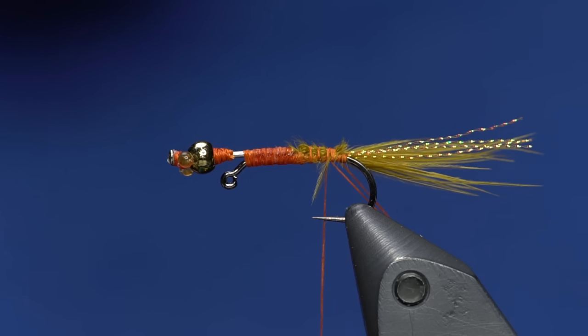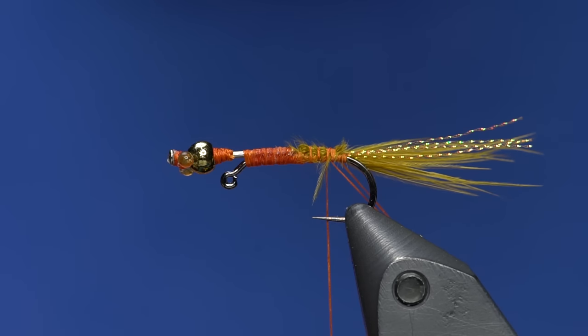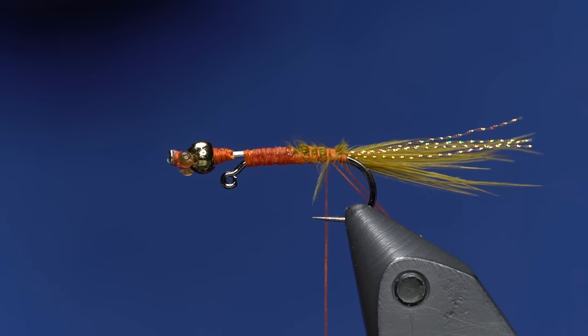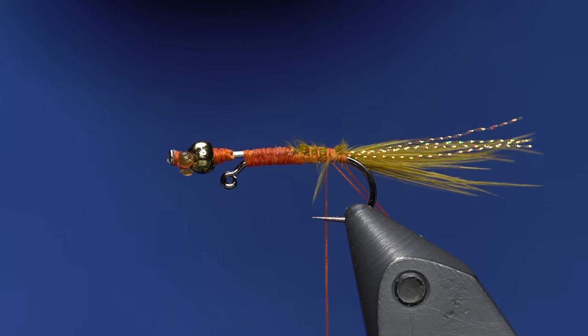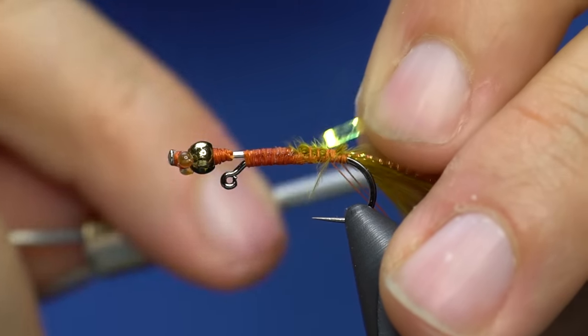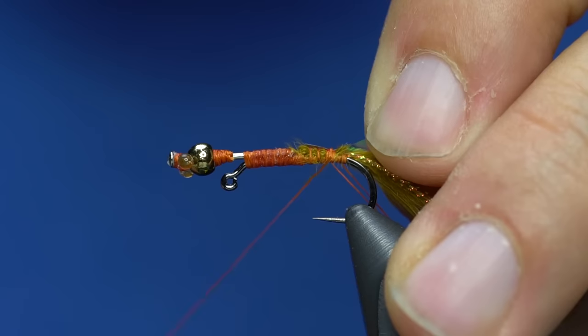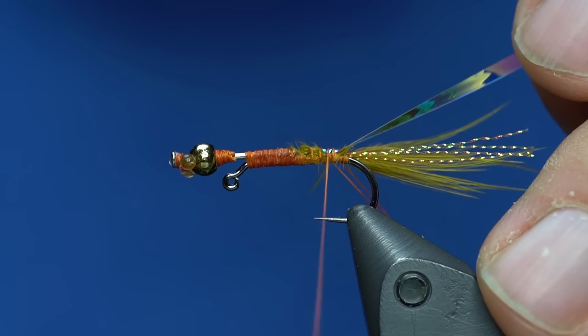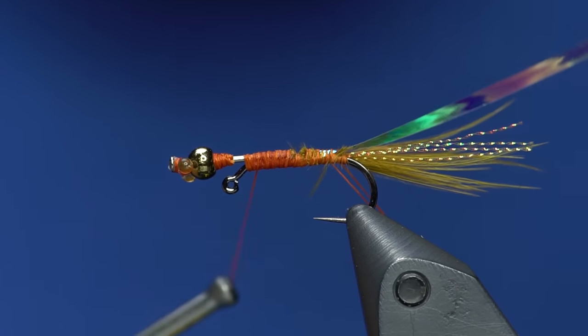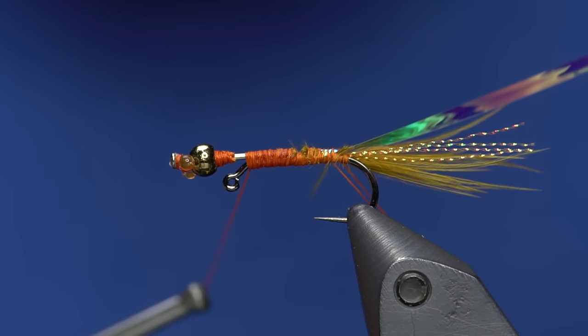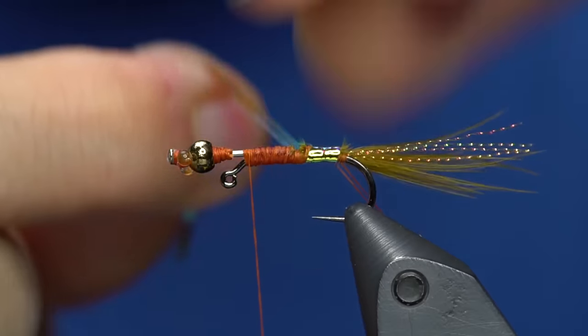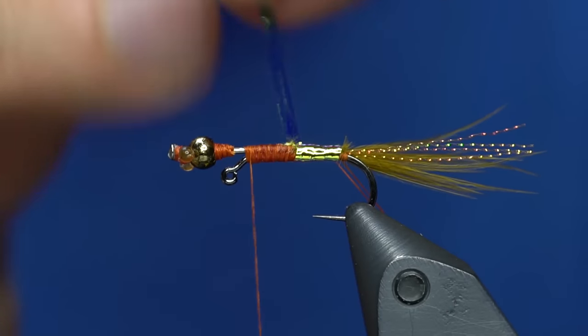I've got some opal mirage tinsel, size large. This is just going to be the base of the body, and it's also going to show through. That's one of the things that I think helps make this so effective. Because I've got that dubbing loop back there, I don't need my thread anymore. I'll just wrap this up to that point and wrap all the way, then trim that off.